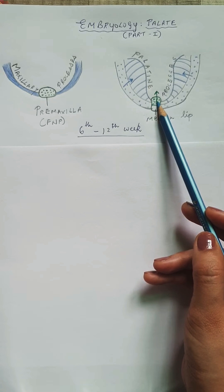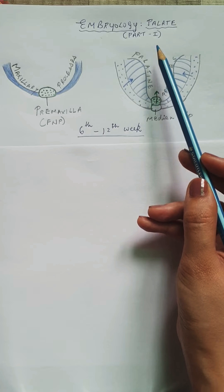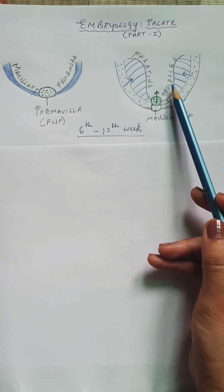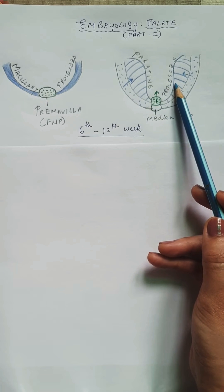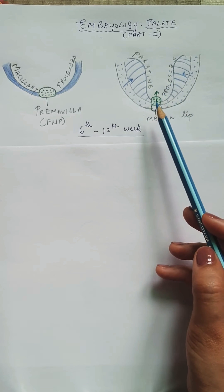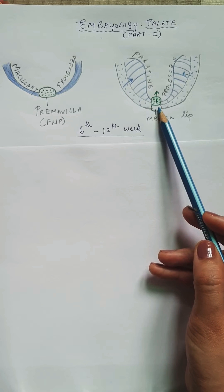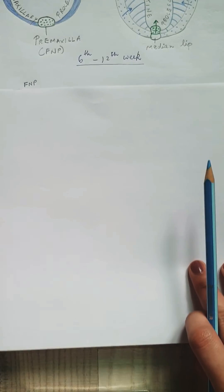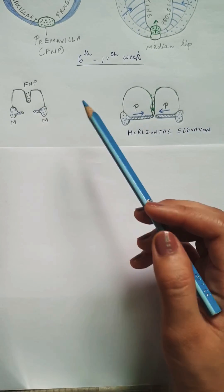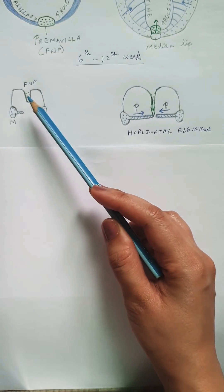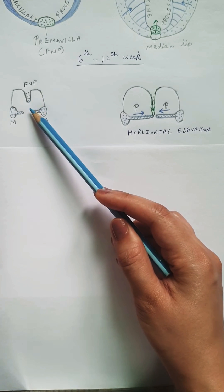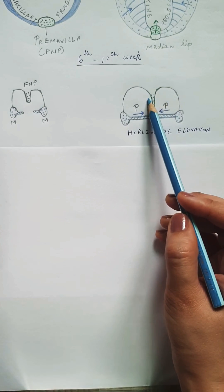The pre-maxilla, which has come from the frontonasal process, is going to grow in the midline longitudinally. From the maxillary processes will stem the palatine processes, which are paired — one on either side — and they will grow towards the midline. During the same period, the median part of the lip, that is the philtrum and the central portion from the frontonasal process, would have developed. From a different view, you can see the frontonasal process and the two lateral palatine processes all meeting each other, forming a sort of an inverted T.